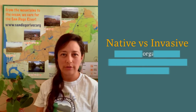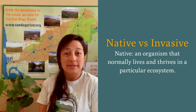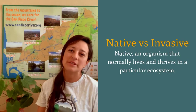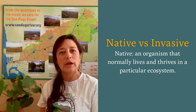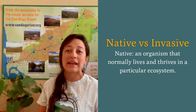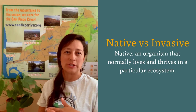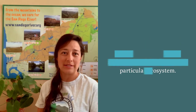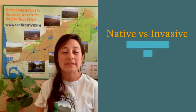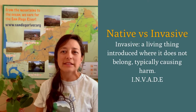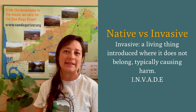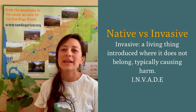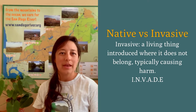First of all, what's a native species? What's an invasive one? A native species is a living organism that has developed and normally lives and thrives in a particular ecosystem. They can be affected by new species. An invasive species is a living thing that gets introduced to a new place that it does not normally belong to, in which it typically causes harm.